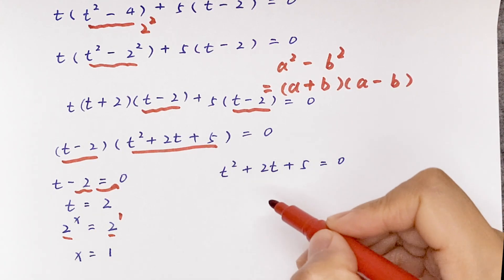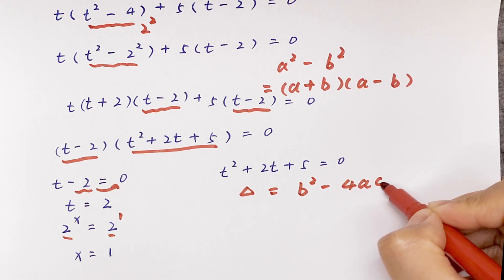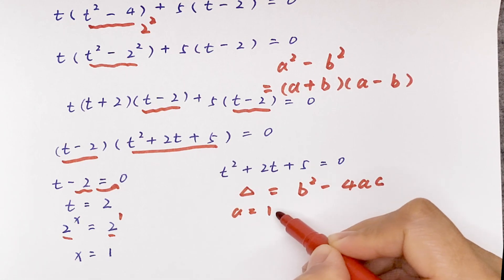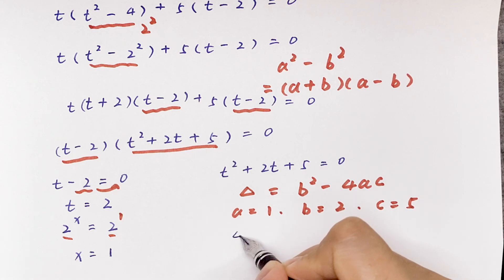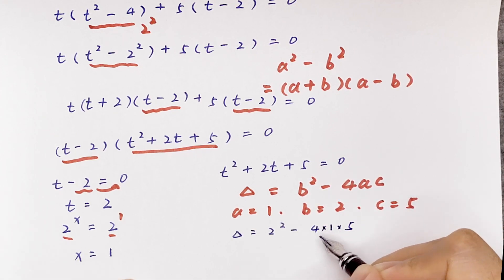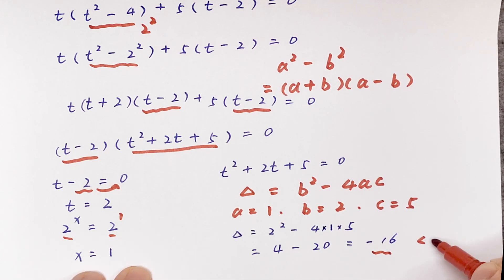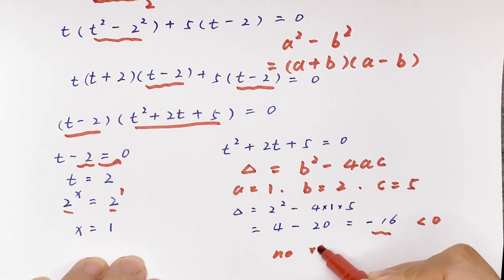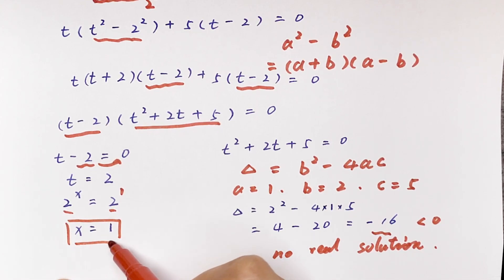Case two: t squared plus 2t plus 5 equals 0. Applying the discriminant formula, delta equals b squared minus 4ac, with a equals 1, b equals 2, c equals 5: delta equals 4 minus 20, which equals negative 16. Since the discriminant is less than 0, there is no real solution. Therefore x equals 1 is the final answer. Thank you for watching and see you in the next video, bye.